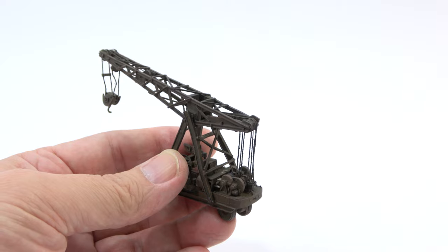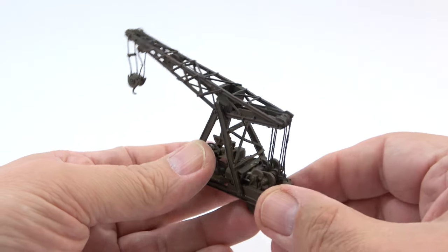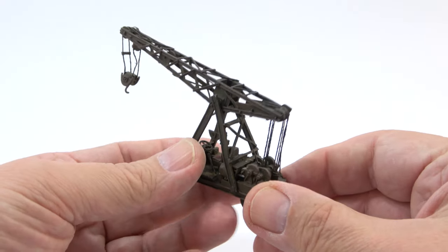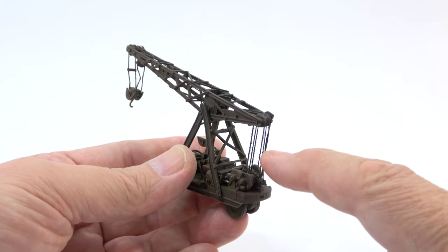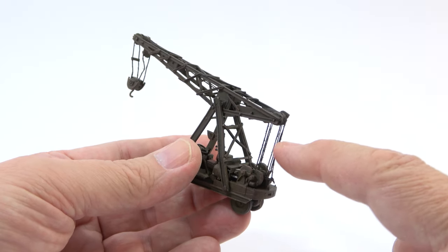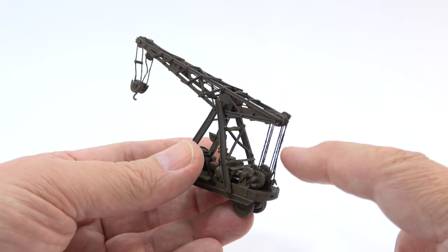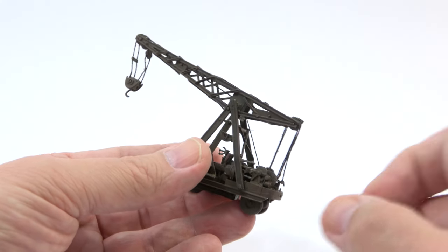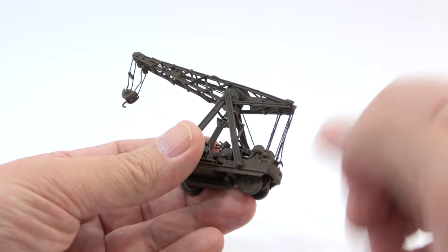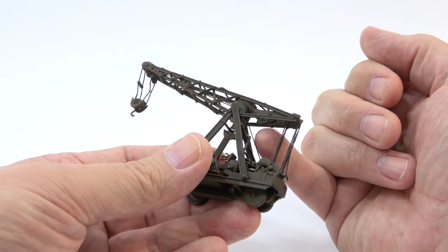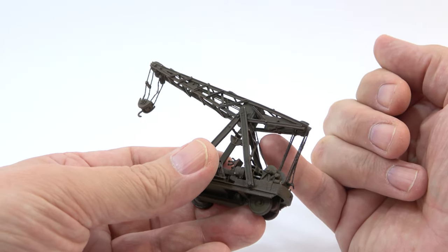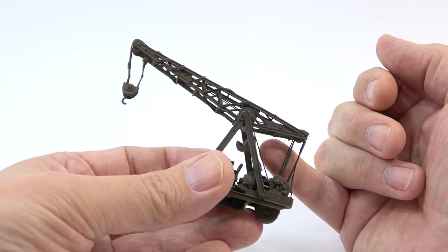You can see that on this crane which is a Langley models kit I've used thread and yes you can see it's gone a bit furry but the super glue has made it quite strong so it's not going to bow anywhere there and you can definitely see that's quite a good stiff bit of thread there that's not going to hang in a funny way.